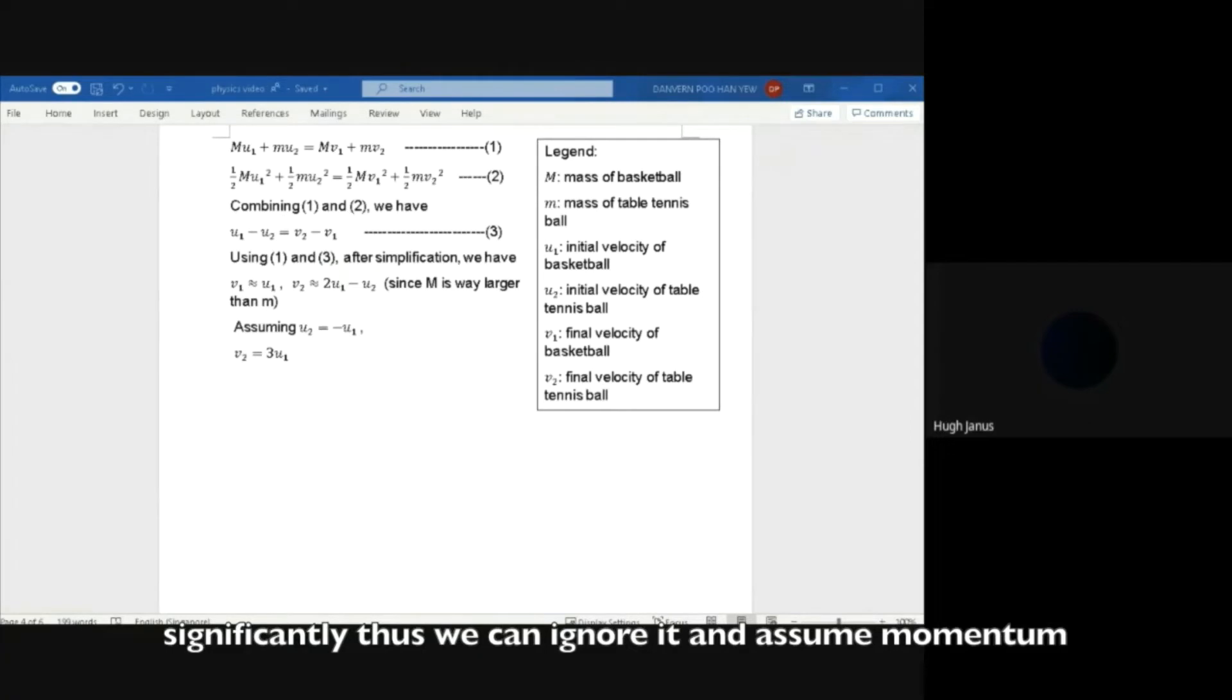Thus we can ignore it and assume momentum is conserved, as shown in equation one. Kinetic energy can also be assumed to be conserved as energy is lost negligibly. Thus this collision can be said to be an elastic collision, which means that the relative speed of approach is equal to the relative speed of separation, as shown in equation three.